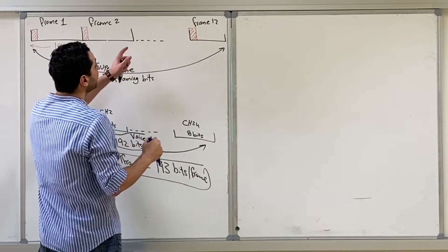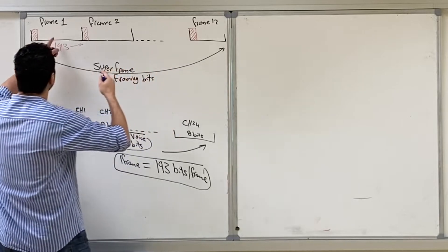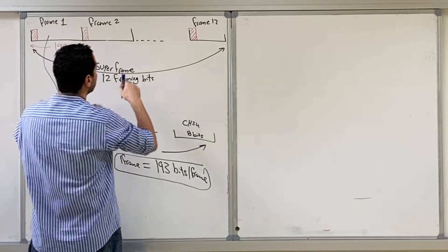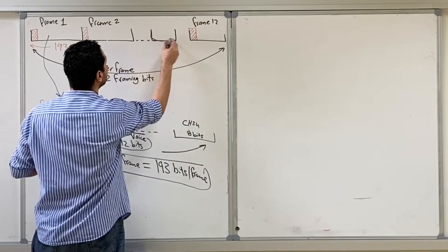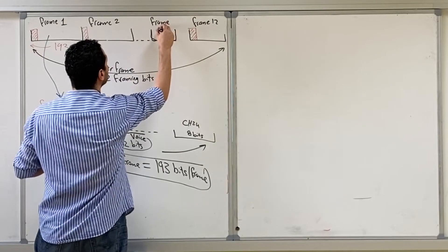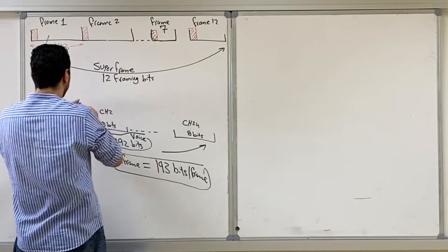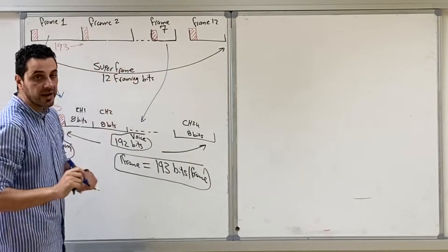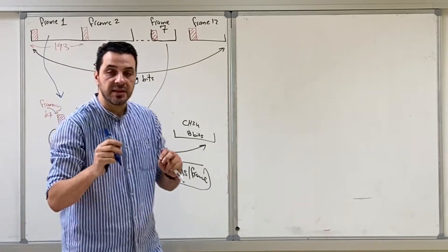Every six frames, they take one frame — let's say frame number one and frame number seven — and they use those frames to send the signaling bits. So frame number one and frame number seven, each with a framing bit, are selected. Every six frames, one frame is taken and its bits are used for signaling.